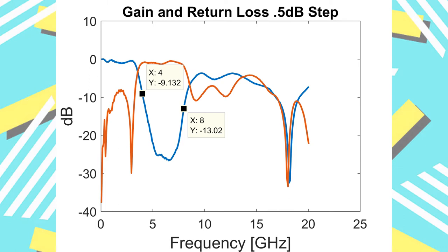The low-pass stepped filter was fabricated with errors. First, the copper was not placed completely flat on the substrate, which can account for some deviation from the simulated values. Second, the copper tape dimensions do not match the simulated values. The fabricated filter was measured and simulated again; the new simulation is closer to the fabricated filter, but it still does not match exactly.